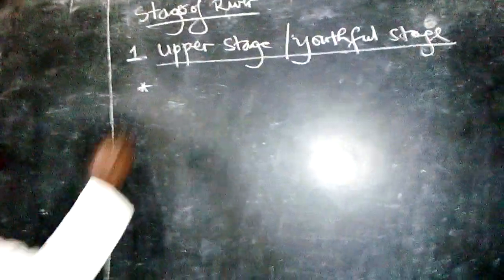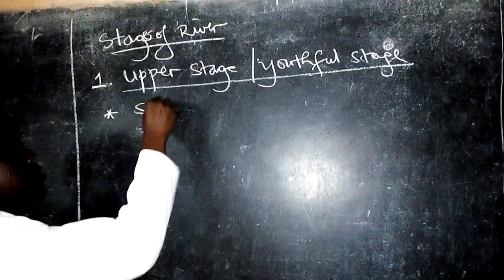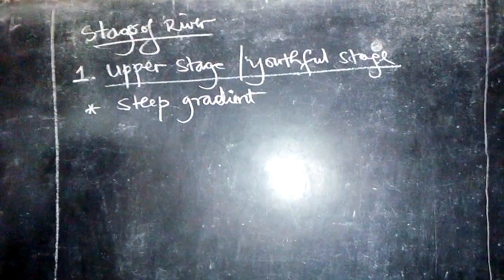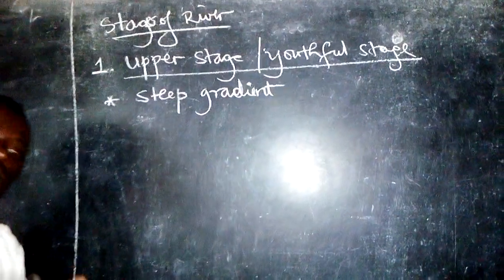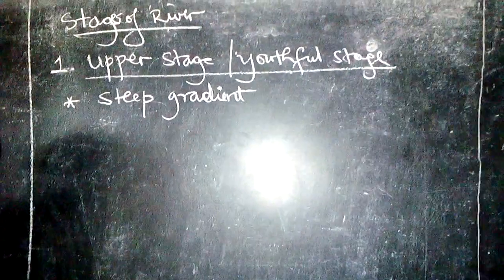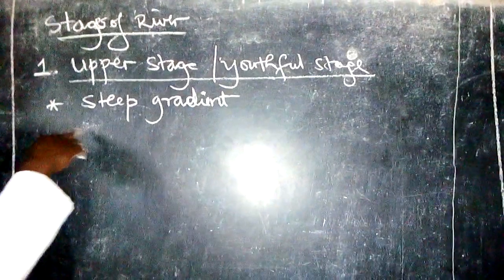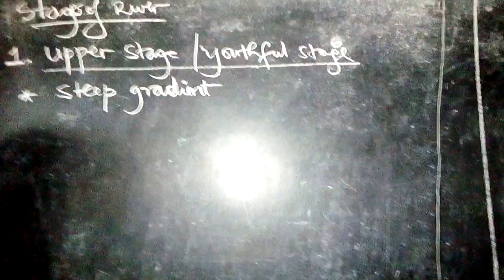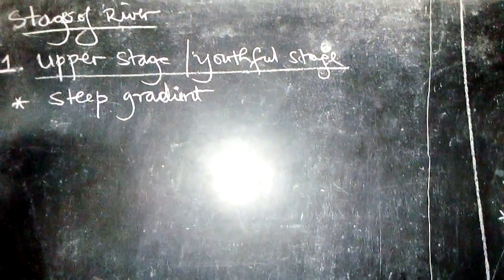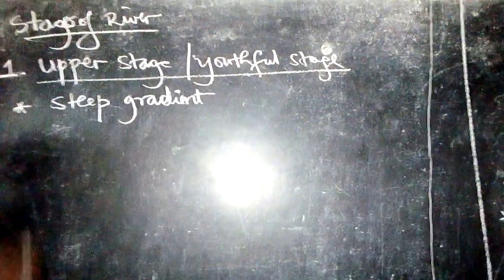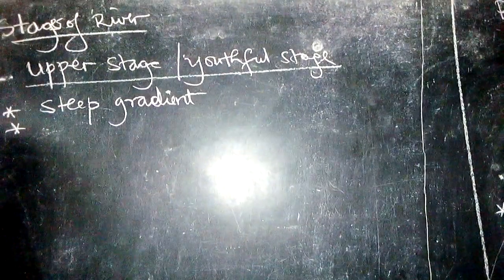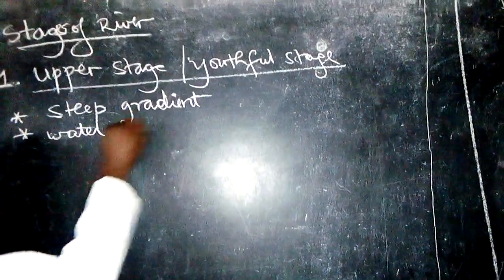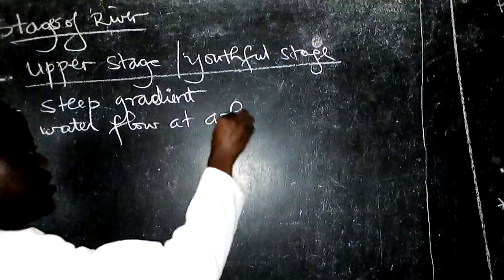In the youthful stage, since it is near to the source, the gradient is very steep. A river descends a mountain near its source, so the gradient must be steep. Because the gradient is steep, the water is flowing at a very high speed.